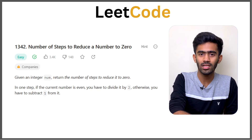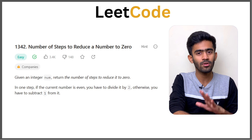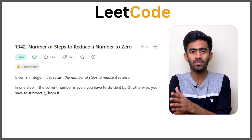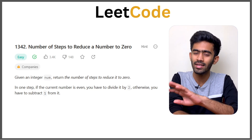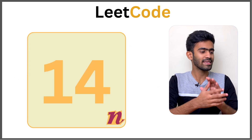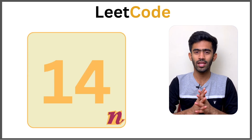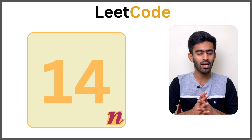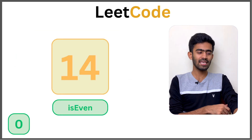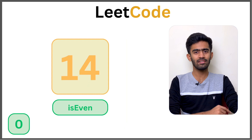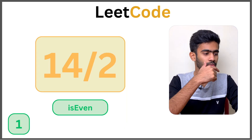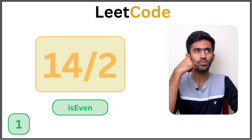Let's walk through one example. Let's write out the algorithm. N equals 14. Now 14 is given to us. 14 is an even number, so we divide it by 2.